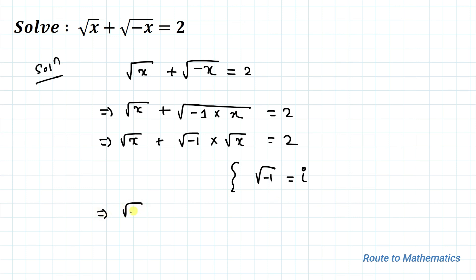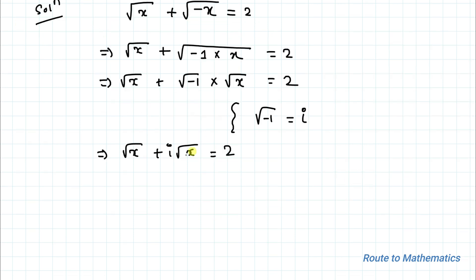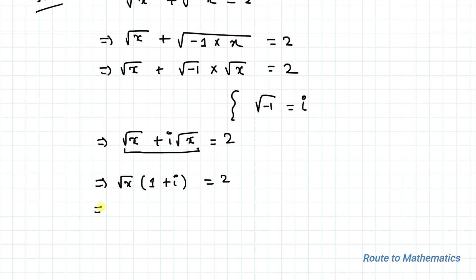We know that root of minus 1 equals iota. So this implies I can write this as root x plus iota root x equals 2. Taking root x common from these two terms, we have root x times (1 plus iota) equals 2.